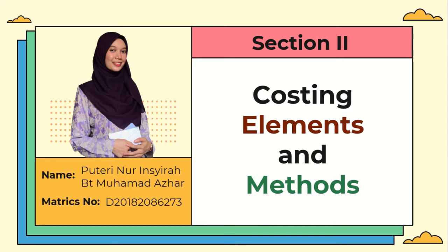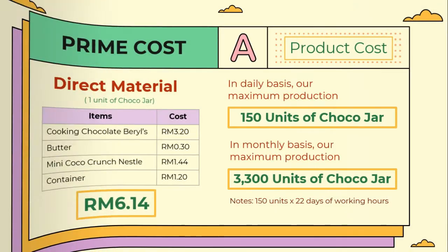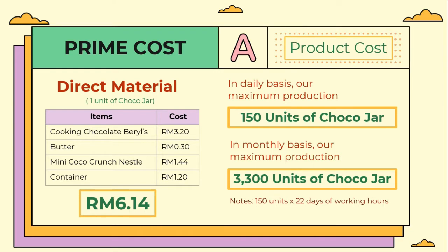My name is Puteri Nur Nishirah and now I'll proceed with our presentation on costing elements and methods for our product. Firstly, we have product cost, also known as prime cost. For our prime cost, we have direct material and also direct labor. As we can see here, 6 ringgit and 40 cents is the total cost of direct material for one unit of Chocojak.